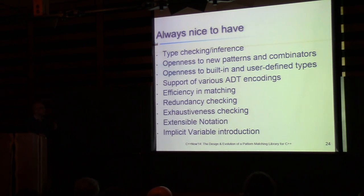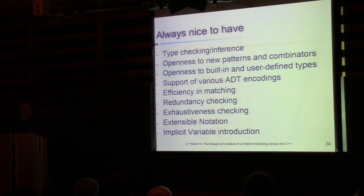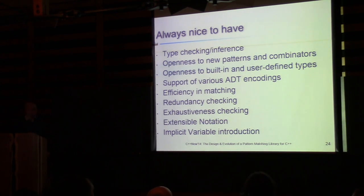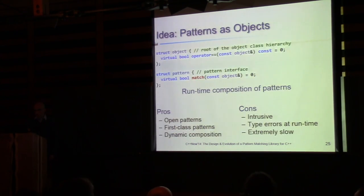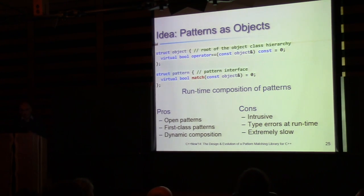We expect the compiler to generate an efficient decision procedure. Redundancy and exhaustiveness checking are important properties. We get most of these in the library — not all: exhaustiveness is still a question, and we don't get implicit variable introduction.